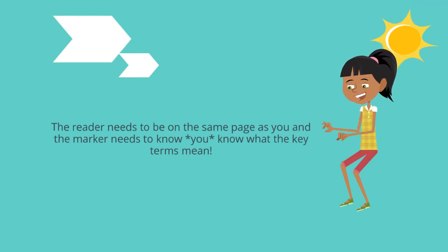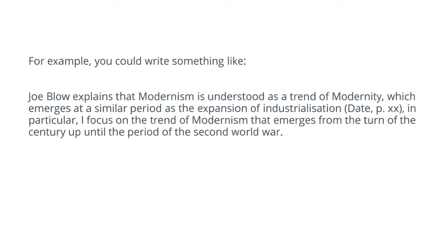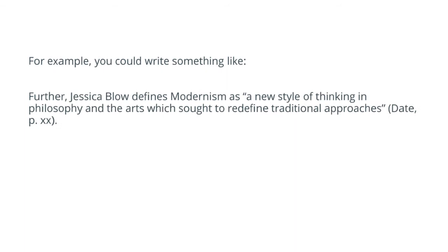The reader needs to be on the same page as you, and the marker needs to know that you know what the key terms mean. For example: 'Joe Blow explains that modernism is understood as a trend of modernity, which emerges at a similar period as the expansion of industrialization [citation]. In particular, I focus on the trend of modernism that emerges from the turn of the century up until the period of the Second World War. Further, Jessica Blow defines modernism as: a new style of thinking in philosophy and the arts, which sought to redefine traditional approaches [citation].'